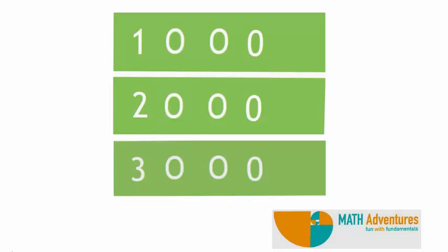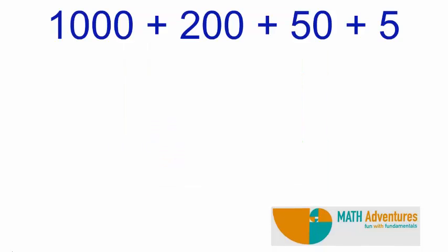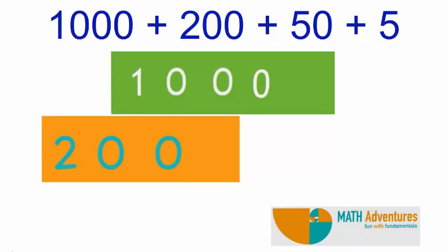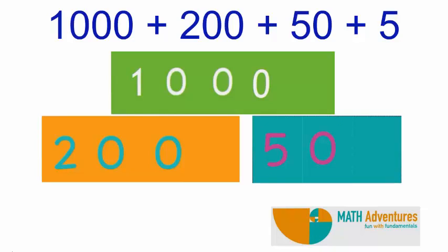Arrange your cards well before you get started. To find the number that is equal to 1,000 plus 200 plus 50 plus 5, remove the green card with the number 1,000. Then remove an orange card numbered 200, then a blue card numbered 50, and a pink card numbered 5.